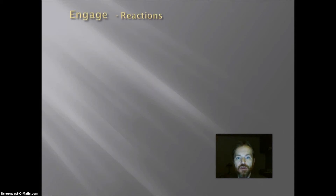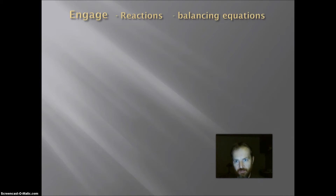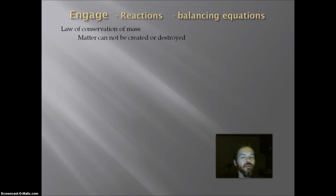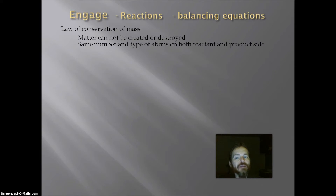In this module on reactions, we are going to look at the final skill set for reactions, which is balancing equations. Balancing equations means that every equation has to follow the law of conservation of mass. The law of conservation of mass states that matter cannot be created or destroyed. Essentially, what this means is that in the course of a chemical reaction, we have to have the same number and type of atoms on both the reactant and product side.